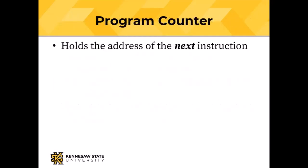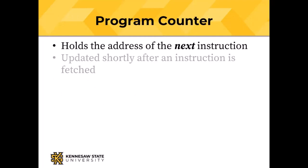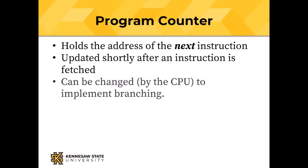The program counter holds the address of the next instruction and gets updated very shortly after an instruction is fetched so that it always points to the next instruction. The program counter can be changed by the CPU — that's how branching works. When you call a method or procedure, or do an if-then-else, the program counter has to be changed.